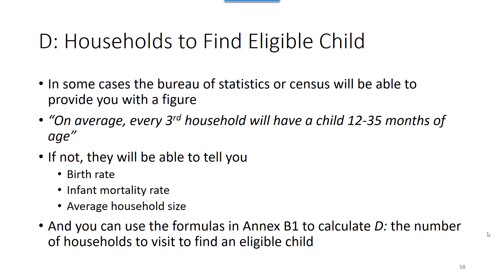The fourth quantity we need to gather, quantity D or value D, is the number of households we will have to visit on average in order to find an eligible child.